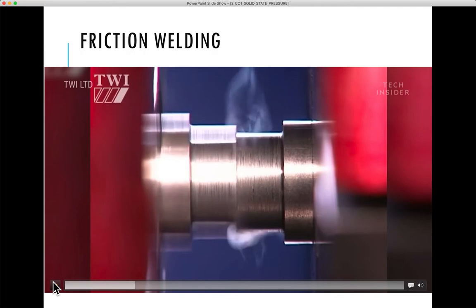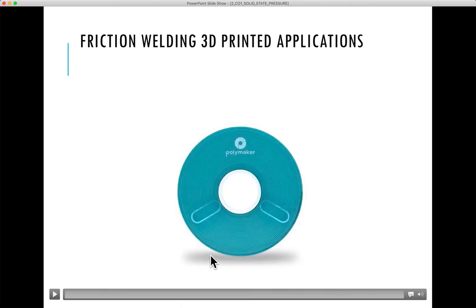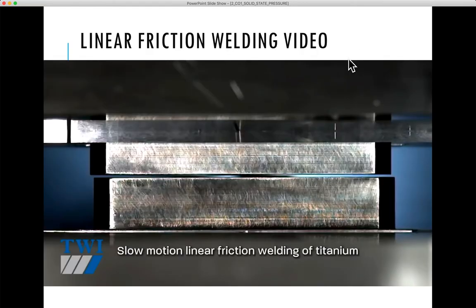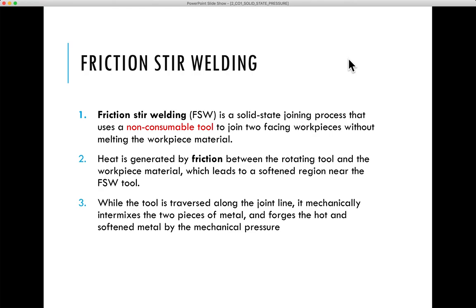The video for friction welding is given in our course platform, so you can refer to that. A video for friction welding of 3D printed applications is also given, and there is another video for linear friction welding as well. Another type of friction welding is called friction stir welding. Friction stir welding is a solid state joining process that uses a non-consumable tool — a specialized milling tool which produces plastic deformation between two surfaces that are required to be joined.